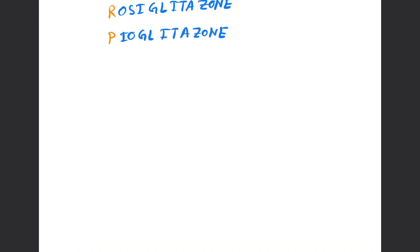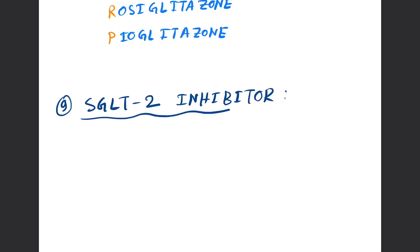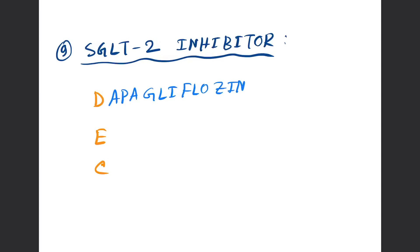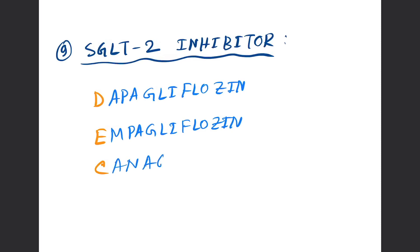Number nine and the last category of drug is SGLT2 inhibitors. You can remember the mnemonic D-E-C: D for dapagliflozin, E for empagliflozin, and C for canagliflozin.